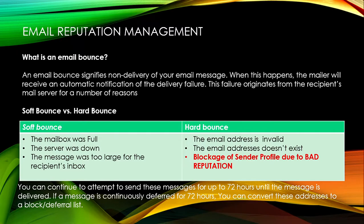These sorts of bounces that can be rectified within a certain period of time are categorized as soft bounces. A hard bounce is something that cannot be sorted out easily — the email address itself is invalid. No matter how many times you send to that particular email address, it's not going to be delivered because the address doesn't even exist. Another cause of hard bounce is blockage of the sender profile due to bad reputation, which is the main topic we are here to discuss today.